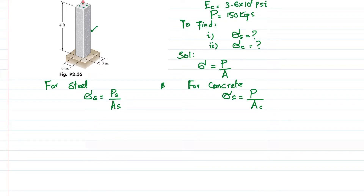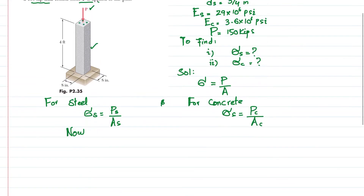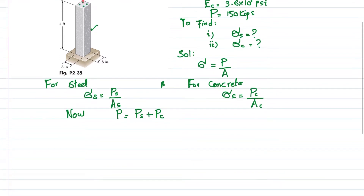The load P is applied on this concrete bar. Some of the load will be taken by the steel and some by the concrete. Their addition P_s + P_c equals the total load, which is 150 kips. Now we will find A_s, the area of steel.